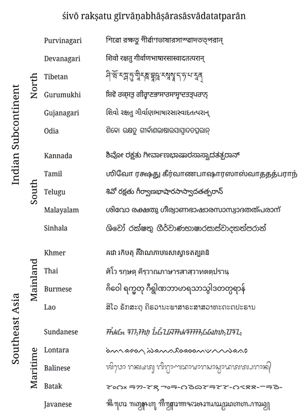Northern Brahmi scripts include: Gupta script (5th century), Sharada (8th century), Gurmukhi (14th century), Landa (10th century), Khojki (16th century), Khudabadi (1550s), Mahajani, Multani, Takri, Siddham (7th century), Eastern Nagari, Assamese script (13th century), Bengali script (11th century), Tibetan script (7th century), Lepcha alphabet, Limbu alphabet, Phags-pa (13th century), Anga Lipi (720), Tirhuta (15th century), and Nagari (8th century).